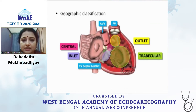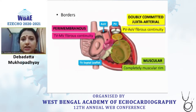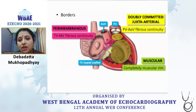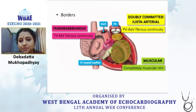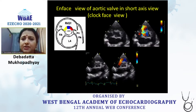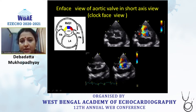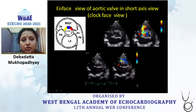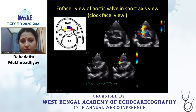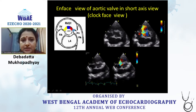This is the international system classification for VSDs — the geography classification depending on location, always from the RV side because the surgeon is going to put a patch from that side. The borders: the doubly committed VSD will be in the region of the fibrous continuity of the semilunar valves, and the perimembranous VSD in the region of the fibrous continuity of the tricuspid and mitral valves. The on-face or clock face view helps differentiate: between 11 o'clock and 1 o'clock is the perimembranous VSD, and beyond 1 o'clock is the outlet or doubly committed VSD.